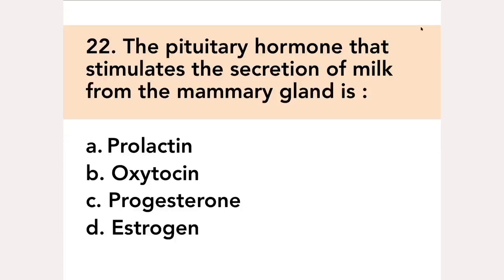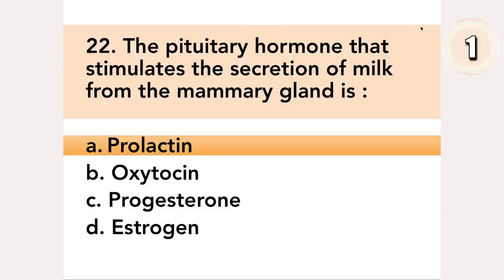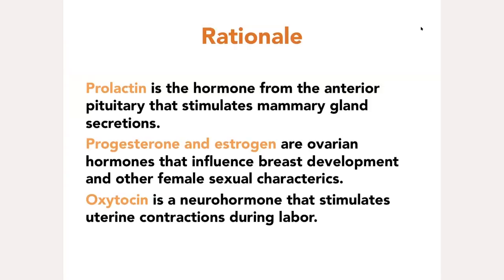The pituitary hormone that stimulates the secretion of milk from the mammary gland is: A. Prolactin, B. Oxytocin, C. Progesterone, D. Estrogen. Answer: A. Prolactin. Prolactin is the hormone from the anterior pituitary that stimulates mammary gland secretions. Progesterone and estrogen are ovarian hormones that influence breast development and other female sexual characteristics. Oxytocin is a neurohormone that stimulates uterine contractions during labor.